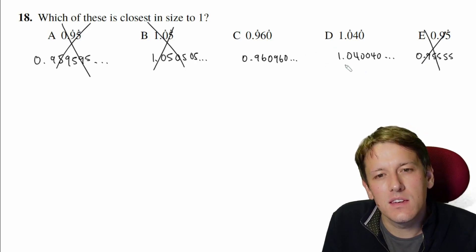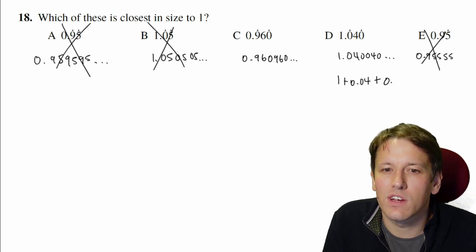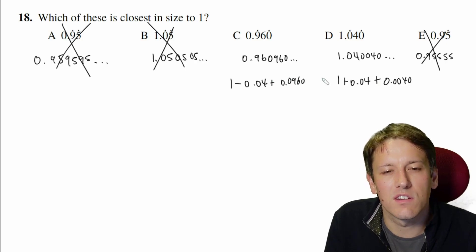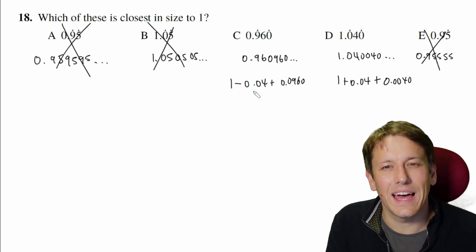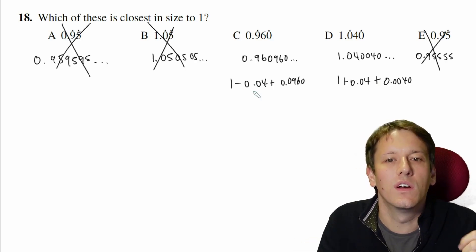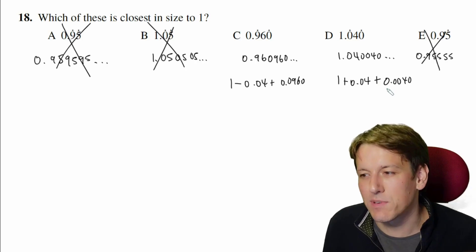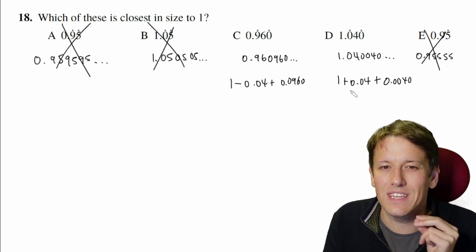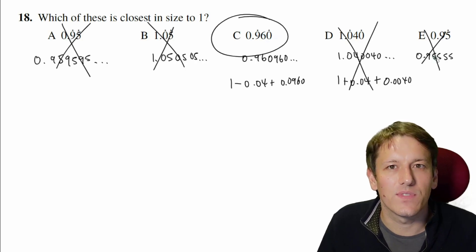Which one of these is closer? Well, D is 1 plus 0.04 plus whatever else that I get here, whereas C is 1 minus 0.04 and then plus 0.0960. So in C, I go 0.04 away from 1 and then adding something back on pulls me a bit closer to 1, whereas in D, I'm adding on 0.04 and then I'm adding on something that takes me further away from 1. So C is closer than 0.04 to 1, whereas D is further away than 0.04 to 1. So we can rule out D, and then the answer here is C.